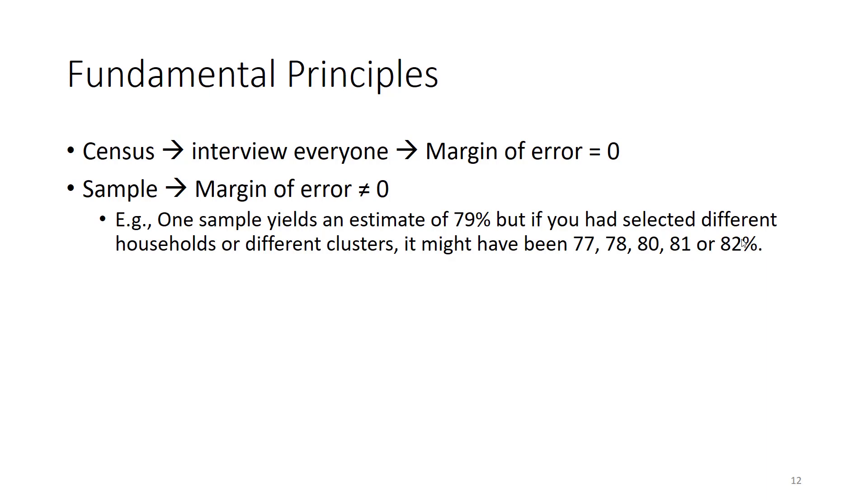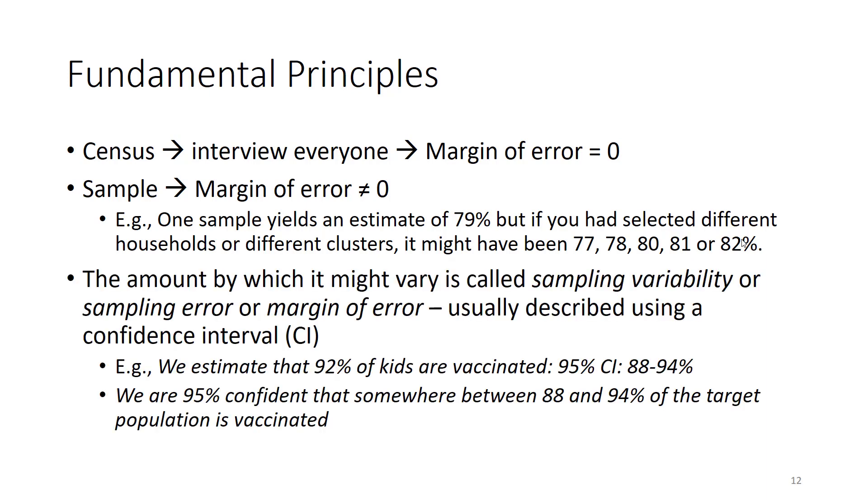The fact that the answer can vary a little bit based on what sample you take is called sampling variability, or sampling error, or margin of error. And we often describe it in the results of our report using something called a confidence interval.